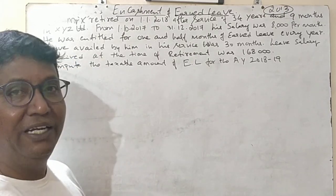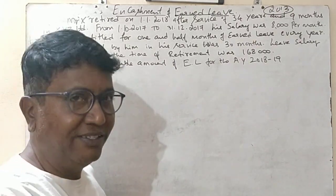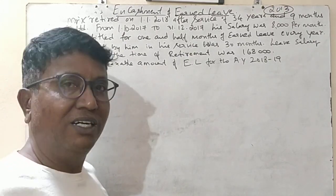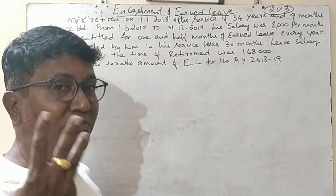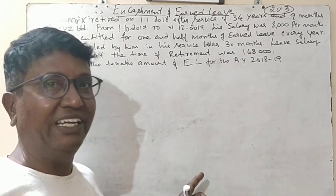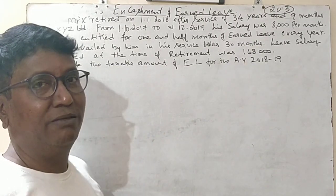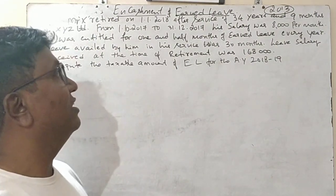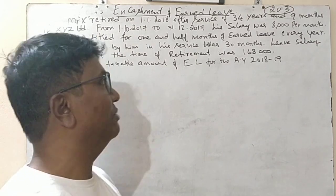In the case of encashment of earned leave, there are two types. You can encash the earned leave when you are in service — for example, if the company gives one month EL per year and you worked three years without taking any leaves, you get three months' salary freely, which is completely taxable. But when you encash the earned leave at the time of retirement only, then the benefit is available.